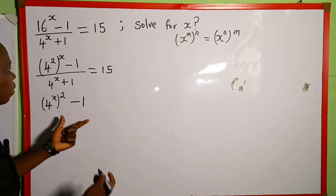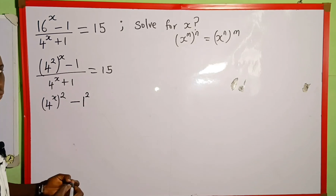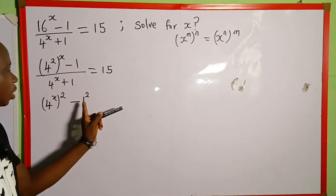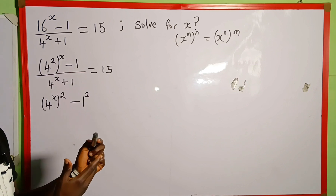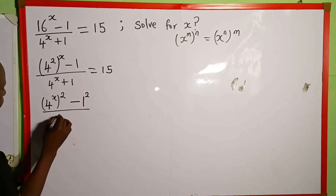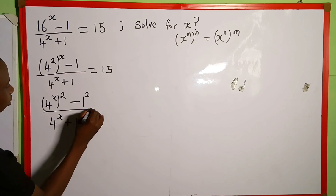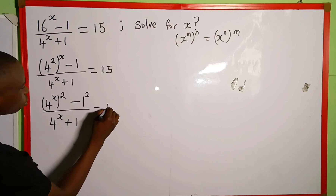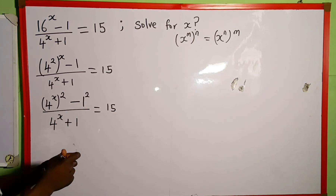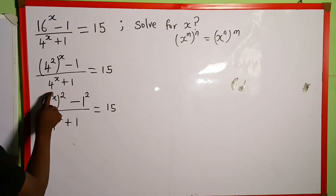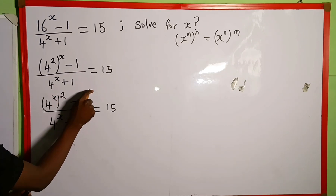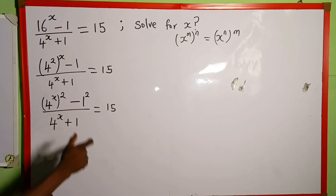And 1 can also be written as 1 raised to the power of 2, because 1 multiplied by 1 is still 1. We do this so that we can have a difference of two squares. So everything now will be over 4 to the power of x plus 1, which is equal to 15. Looking at the numerator, we have a difference of two squares: 4 raised to the power of x, all to the power of 2, minus 1 to the power of 2.